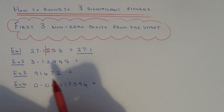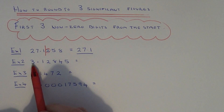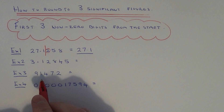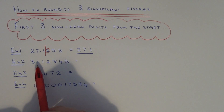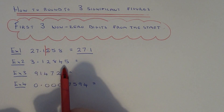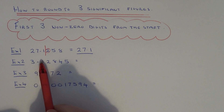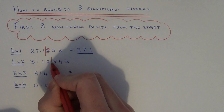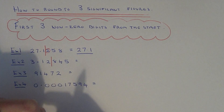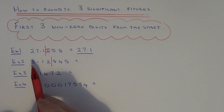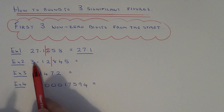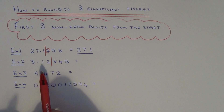Let's move on to example two. This time we've got 3.12845 to round to three significant figures. So it's three numbers from the start of the number, so we go one, two, three and we cut our number off here. So we either leave it as 3.12 if we round it down, or if we round it up it'll be 3.13.